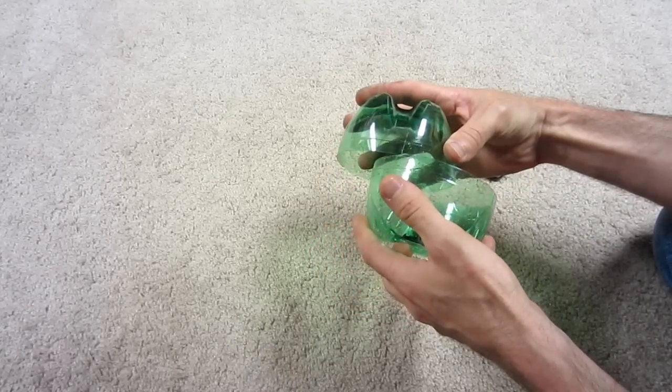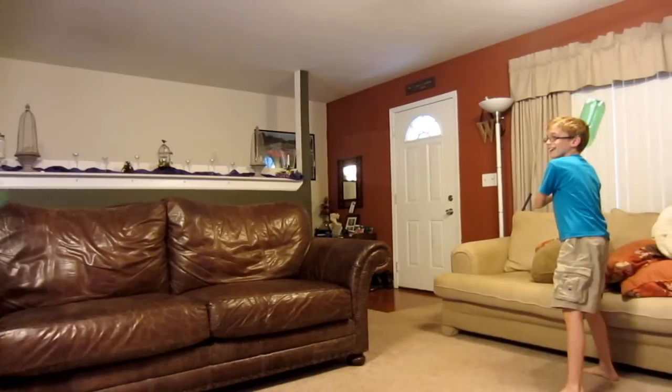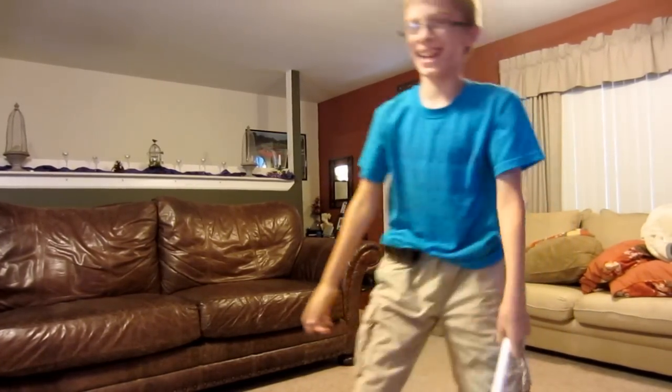Number 3. Cut the bottom off two bottles and tape them together. Then attach a third bottle to a pole and you have made yourself a homemade softball set.